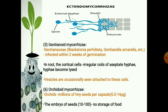The fifth type of mycorrhizae is the gentianoid mycorrhizae. Seedlings of some members of the Gentianaceae get infected within two weeks of germination. In the root, the cortical cells become full of irregular coils of aseptate hyphae. With time, the hyphae become lysed, and vesicles are occasionally seen attached to these coils.